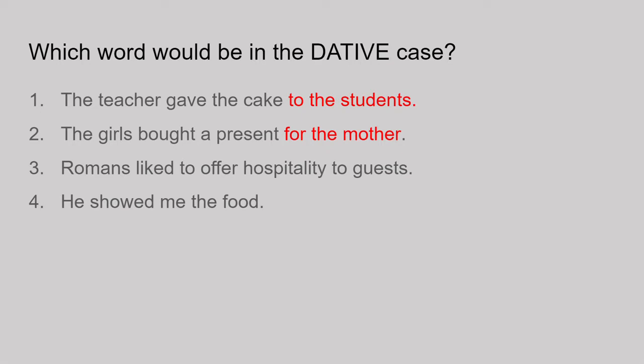Number three — in this one I have two 'to's in my sentence: the Romans liked to offer hospitality to guests. So which word is the dative? 'Liked to offer' is a verb — 'liked' followed by an infinitive, 'to offer.' 'Offer' is a verb, not a noun, and verbs don't have cases. So breaking it down: the Romans are my nominative, then the verb 'liked,' then the infinitive 'to offer,' then the accusative 'hospitality,' and finally the dative 'to guests.' The guests are the indirect object — the hospitality is given to them.